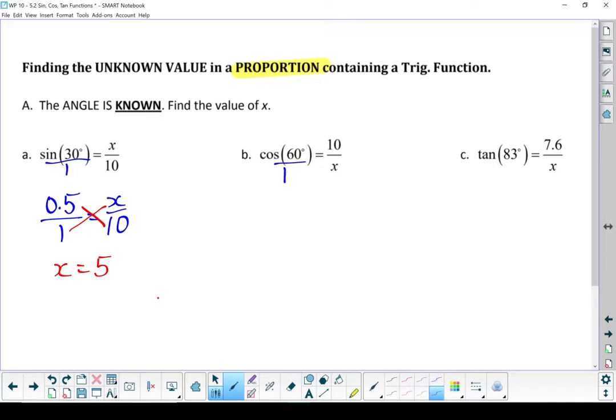Turn it into a proportion. Turn cos of 60 degrees into a decimal. Cos of 60 degrees is also 0.5. It's going to be over 1 equals 10 over x. Let's cross-multiply. 0.5 times x equals 1 times 10, which is 10. Divide both sides by 0.5, and my x equals 20.